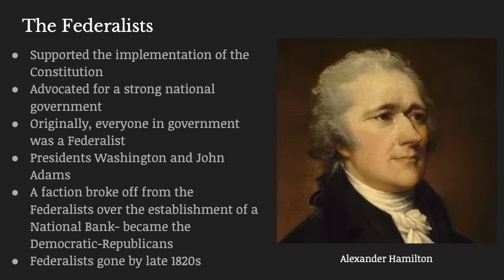As a result of that, a faction of Federalists broke away, because while they favored a strong national government in principle, they felt that establishing a national bank would make the federal government too strong relative to the states. That group gave itself a different name: the Democratic Republicans. Obviously, that is a very confusing name for a political party in the era in which we live, since the names of our two main political parties are the Democrats and the Republicans. The Democratic Republicans will eventually evolve into the Democratic Party, and the Republican Party comes along much later. The Federalists are basically gone by the 1820s.